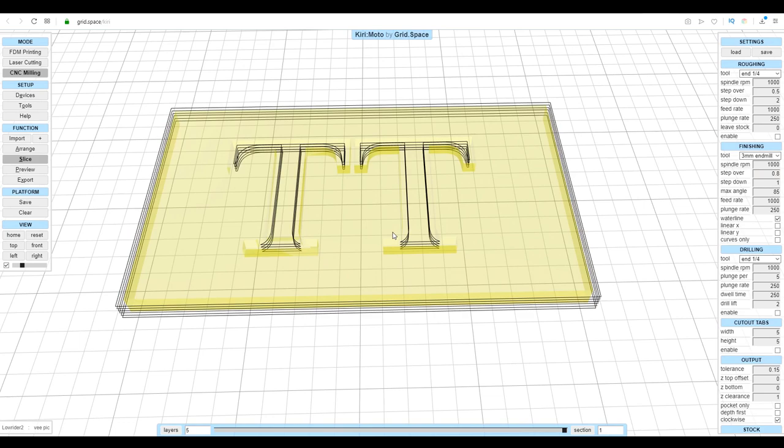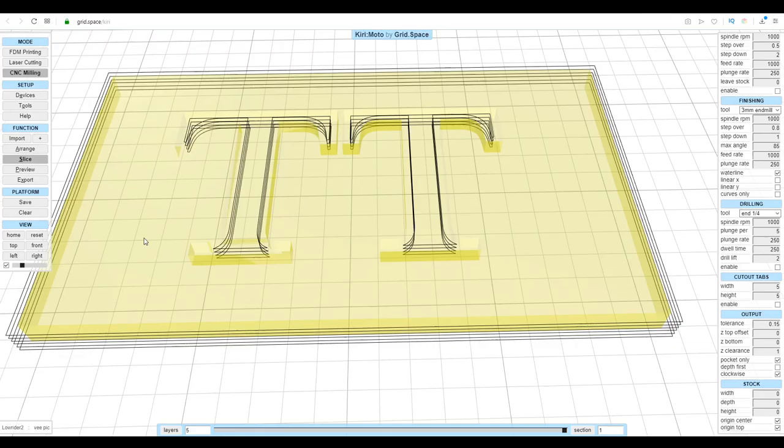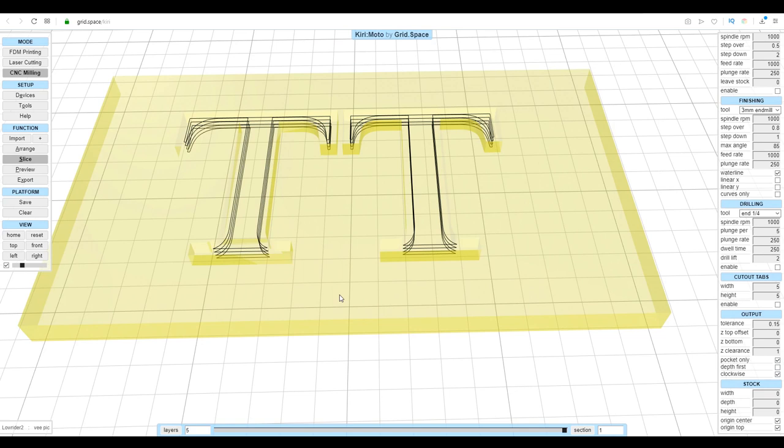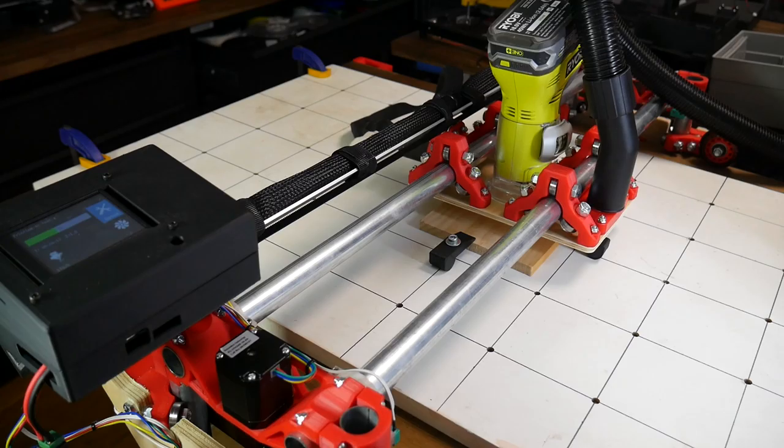Now we can go to slice and it'll give you a preview of the toolpath. We have a problem in that it's trying to cut out the outside of the block. For internals only we need to click pocket only. Now when we re-slice we'll get a preview and it's no longer trying to cut out the whole piece and will limit itself to just the engraving. You can then click the preview button to see the final toolpath and in Kirimoto the origin of the job is always in the top middle. Finally we can click export, name and download our gcode.